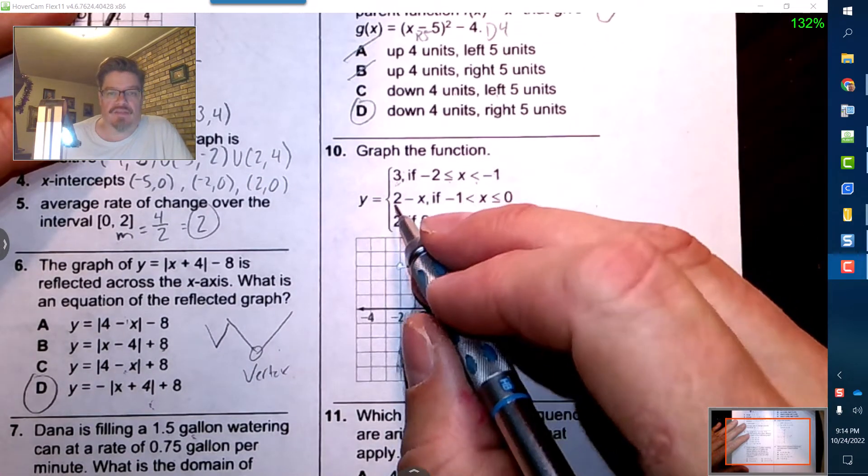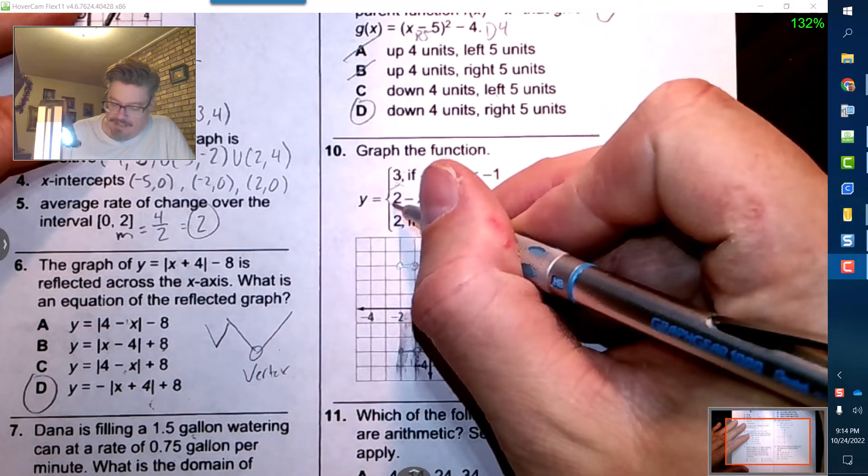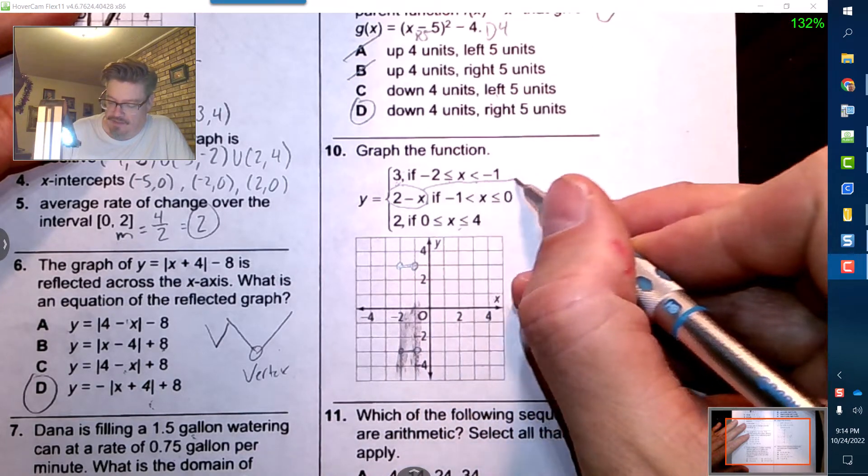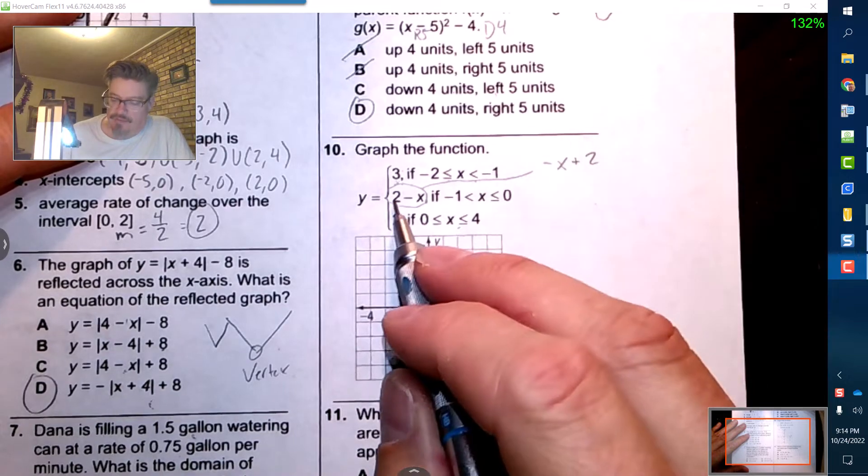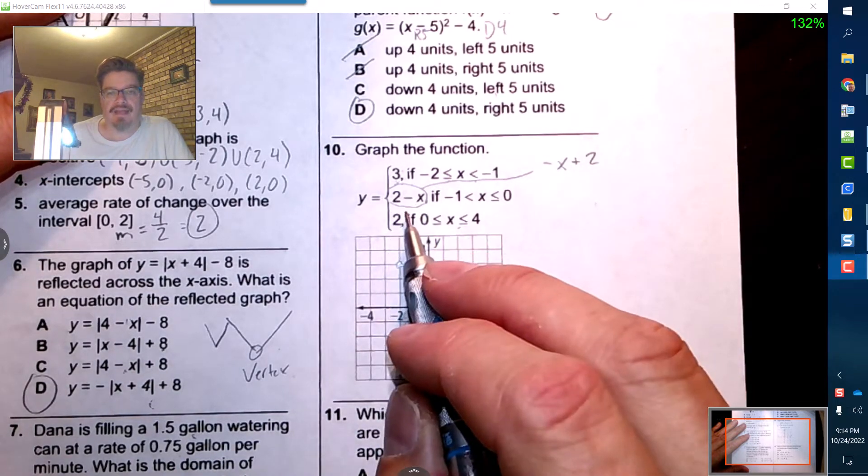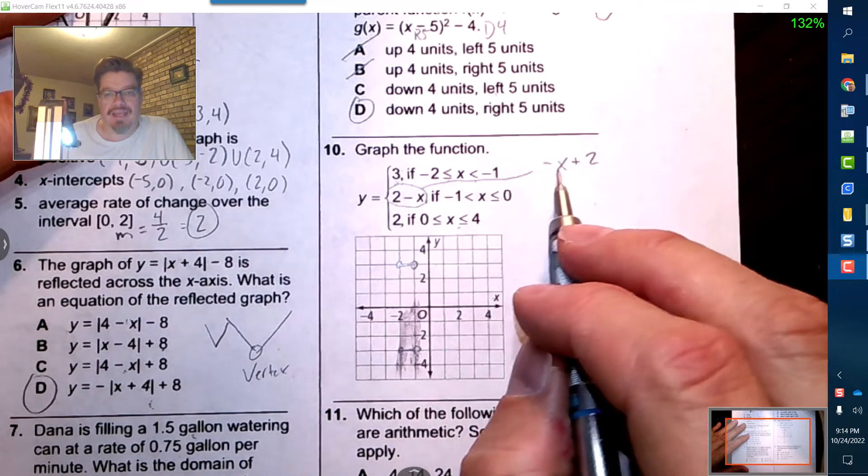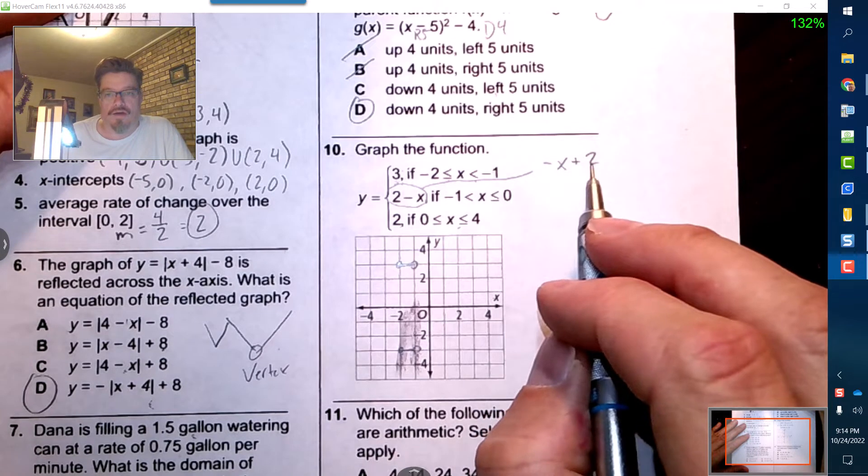Now this one, that is not in slope intercept form so what I'm going to do is I'm going to rewrite this. I'm going to put the negative x plus 2, the 2 is positive here, the x is negative. So this means that I'm going to have a negative 1 slope off of the y-intercept of 2.